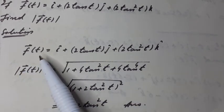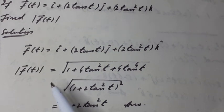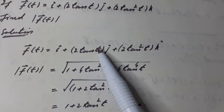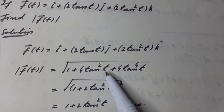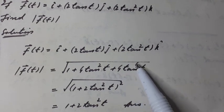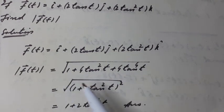Therefore, magnitude of the vector function f(t) equals square root of 1 squared plus 2 tangent t squared plus 2 tangent squared t squared, which is square root of 1 plus 4 tangent squared t plus 4 tangent to the power 4 t.